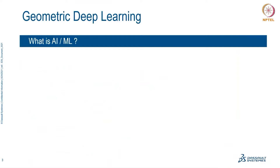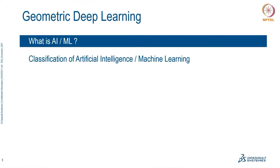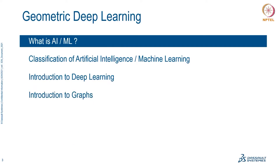We'll cover what artificial intelligence and machine learning actually are — a brief overview and classification of these algorithms. We'll introduce ourselves to deep learning, then go into an introduction of graphs, because the main highlight is the graph neural network, which is part of geometric deep learning. You need some basic understanding of graphs to understand how they are used in graph neural networks.